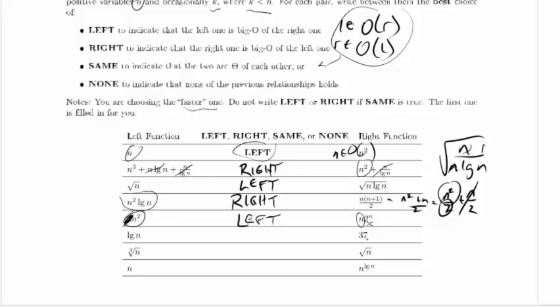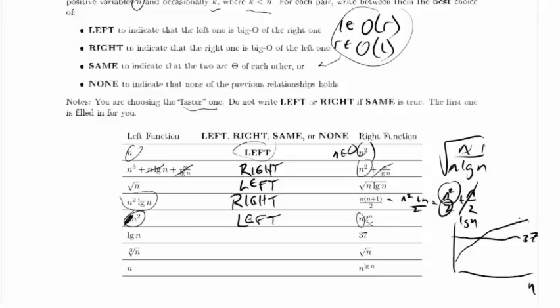log of n versus 37. Just imagine graphing this. Here's n and here's log of n. This is a slow growing function, but any constant you want to pick, like 37, this function will eventually exceed it. The function goes to infinity as n goes to infinity, it just goes more slowly than n or n squared or anything like that. So any constant is going to be faster, asymptotically, than log of n.